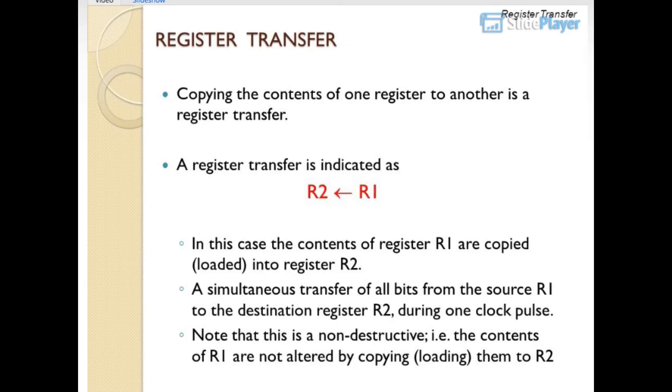Register transfer: copying the contents of one register to another is a register transfer. A register transfer is indicated as R2 gets R1. In this case the contents of register R1 are copied or loaded into register R2. A simultaneous transfer of all bits from the source R1 to the destination register R2 during one clock pulse. Note that this is non-destructive, i.e., the contents of R1 are not altered by copying or loading them to R2.